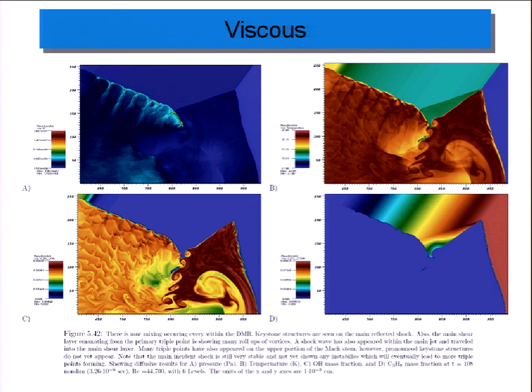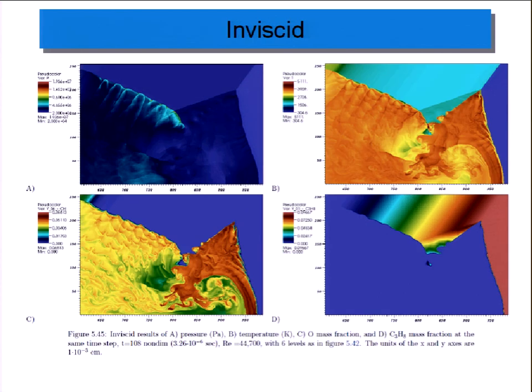Also, you see that there are more vortices when you don't include viscosity and you model the inviscid equations, the Euler equations. The amount of mixing depends on your resolution. If you want your solution to be better and you use more and more cells, the solution keeps changing. So you don't actually know what's happening. You get the main structures, but you don't know what the mixing is.